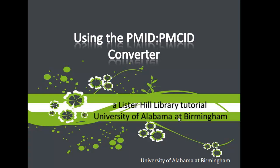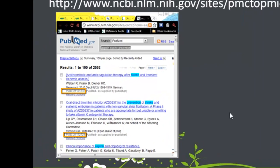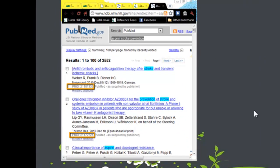In this tutorial, we will find PMC IDs for articles in PubMed using the PMID to PMC ID converter. Every article included in PubMed has an identification number, the PMID.